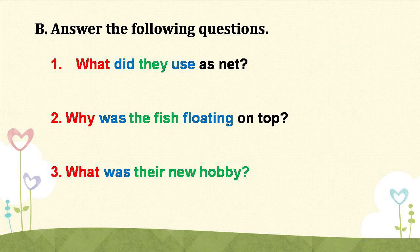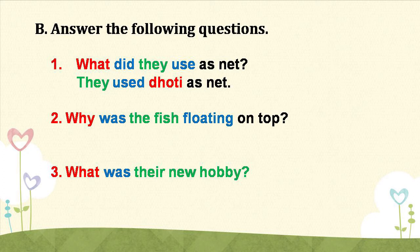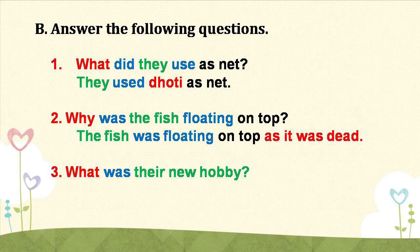Exercise B involves identifying the question word, subject, verb and answer for each sentence. Question number one: What did they use as net? The answer structure is: they used a net. Another question: The fish was floating on top because it was dead.